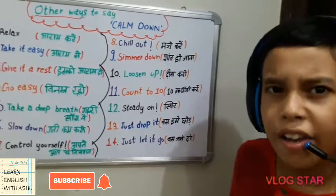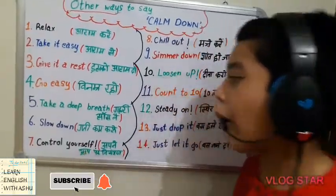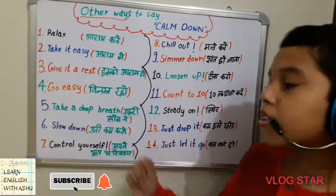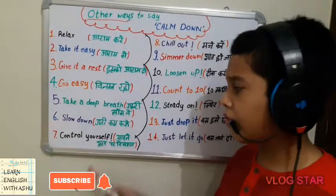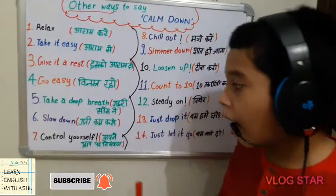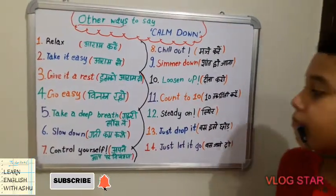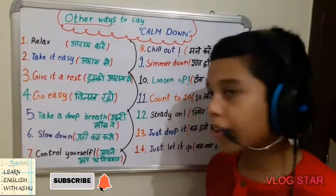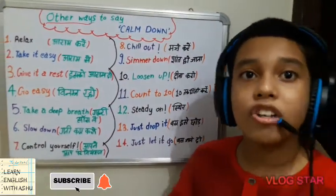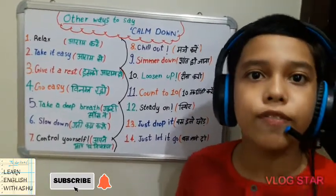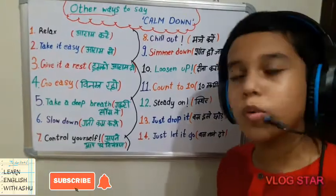Our next phrase is 'control yourself.' The Hindi of this phrase is 'apne aap par niyantran rakhe.' Sometimes when we are angry or anxious, we do things we don't want to. So for that, we can use this phrase — it is a very nice phrase to use in that situation.